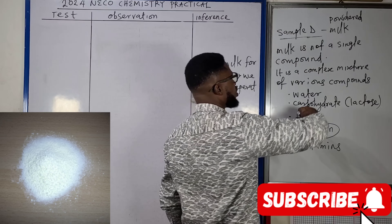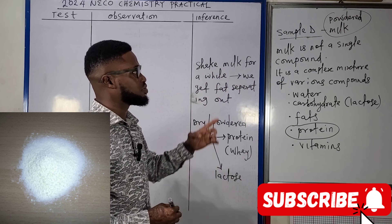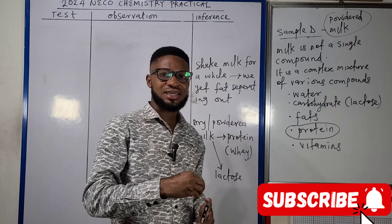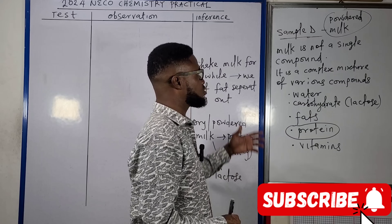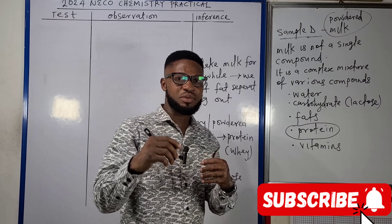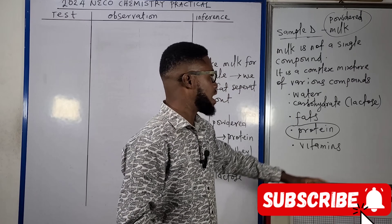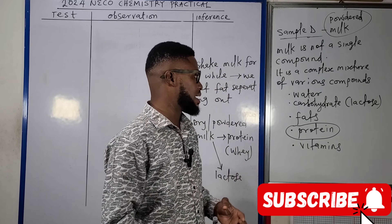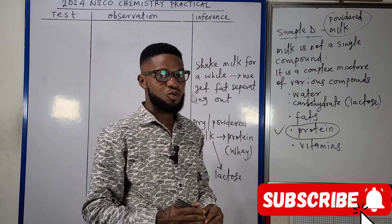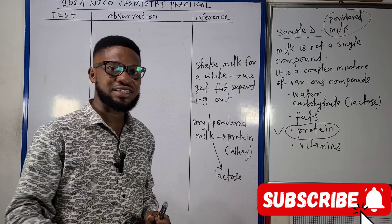Sample D for this year's exam is going to be powdered milk. Regarding powdered milk, you cannot say it is an organic compound. In fact, it is a misnomer to call milk a compound — milk is not a single compound, it is a complex mixture of various compounds. Milk contains water, carbohydrates (specifically lactose, a disaccharide made up of glucose and galactose), fats, proteins, and vitamins.